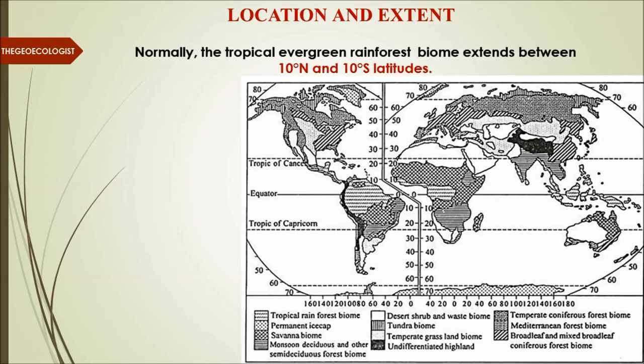The tropical evergreen biome — also sometimes called the tropical evergreen rainforest biome — normally extends between 10 degrees north to 10 degrees south latitudes from the equator. This is the area covered by the tropical evergreen rainforest biome.